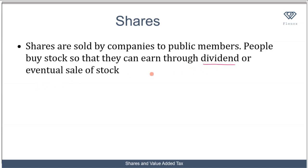By becoming a part owner of the company, you are entitled to a dividend. When you own part of a company and the company starts generating profit, based on the fraction of the company you own, you are entitled to a fraction of the profit. That profit you are entitled to is referred to as a dividend.